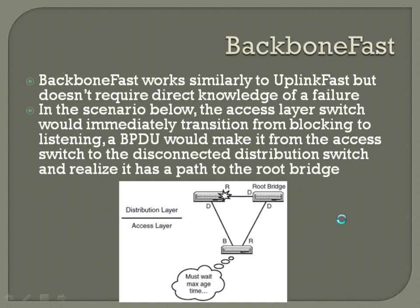BackboneFast works very similarly to UplinkFast, but it does not require direct knowledge of a failure. It's basically the same setup, except instead of the failure happening where this switch can see it immediately, it happens upstream where it's not necessarily going to immediately detect the topology change. In the scenario shown, the access layer switch would immediately transition from blocking to listening, and a BPDU would make it from the access switch to the disconnected distribution switch so it realizes it has a path through the network. That's the key difference between UplinkFast and BackboneFast — they perform a very similar function but differ in where the knowledge of the failure occurs.